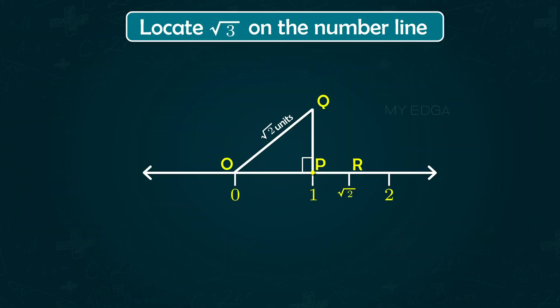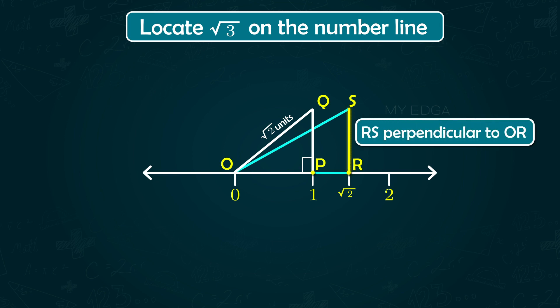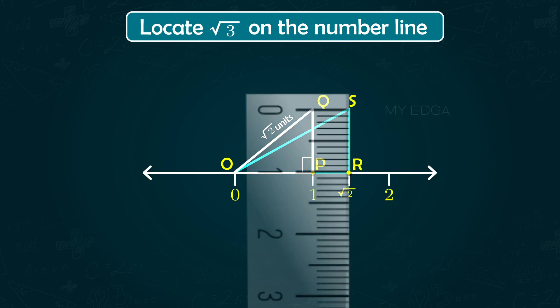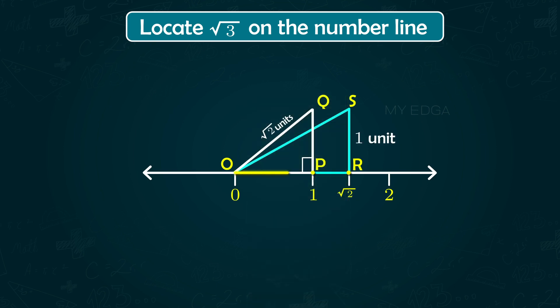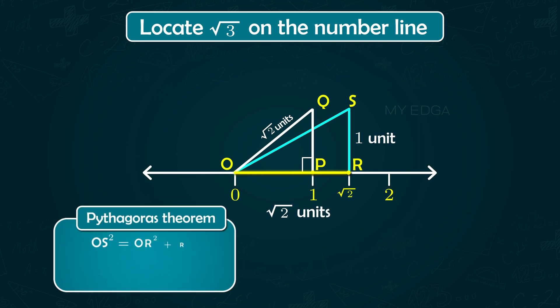Similarly, to locate √3 on the number line, construct another right-angled triangle ORS with RS perpendicular to OR, length of the side RS equals 1 unit, and OR equals √2 units. As per Pythagoras theorem, we will get the length of the hypotenuse as √3 units.